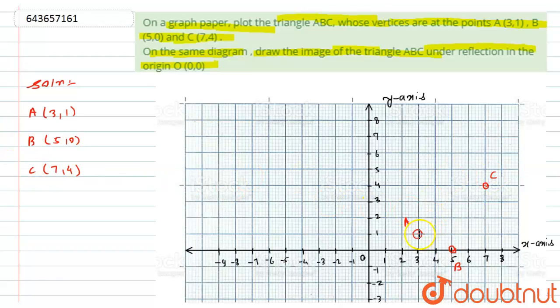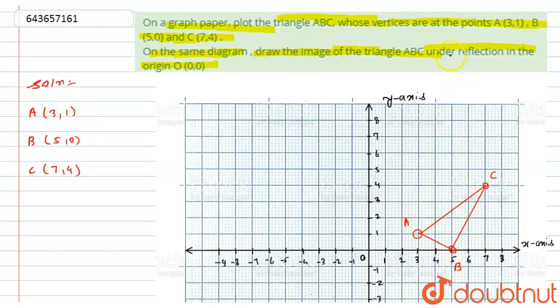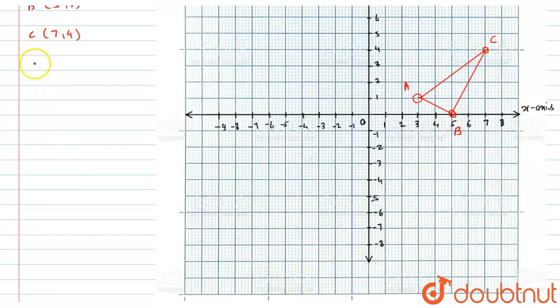Now if I will try to draw this, so if I will join the points A to C, similarly point C to B and similarly point A to C, so it will be form the triangle which is stated here into the question. Now we have to reflect this triangle ABC under the origin with point (0,0), so for that I have to find the first coordinate. So let's say the A point's reflected point is nothing but A dash.